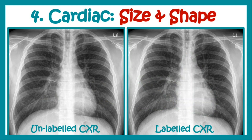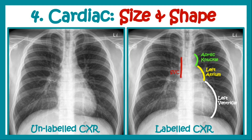Now let us come to the shape of the heart. We can see the contour of the heart, and specific contours indicate certain parts. This part indicates the projection of the aorta, known as the aortic knuckle. The bulge just below it is the part of the left atrium, and then we see the left ventricle. On the right hand side we can see the shadow of the SVC, then the right atrium and the IVC. These are the structures visible on the contour of the heart.